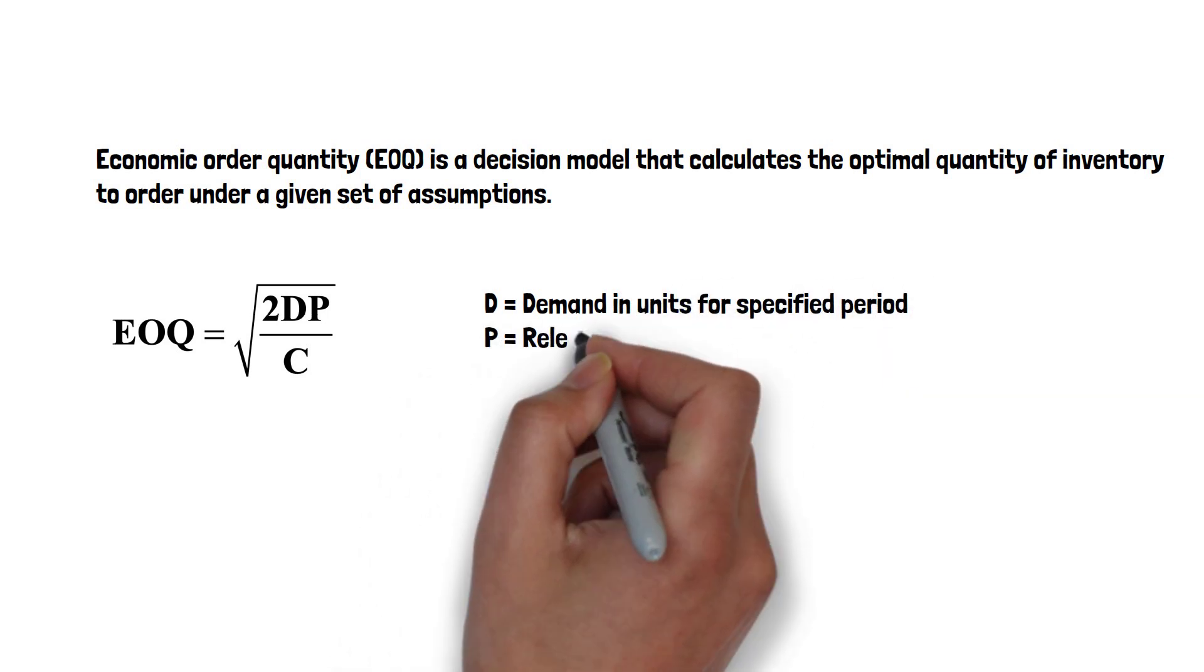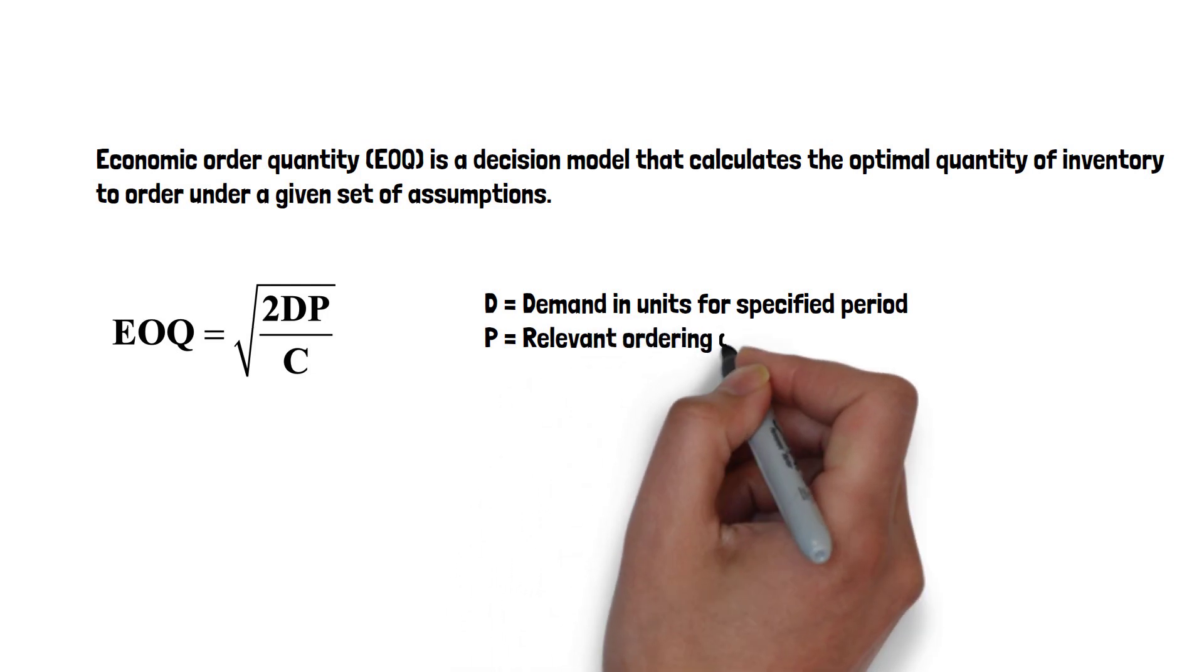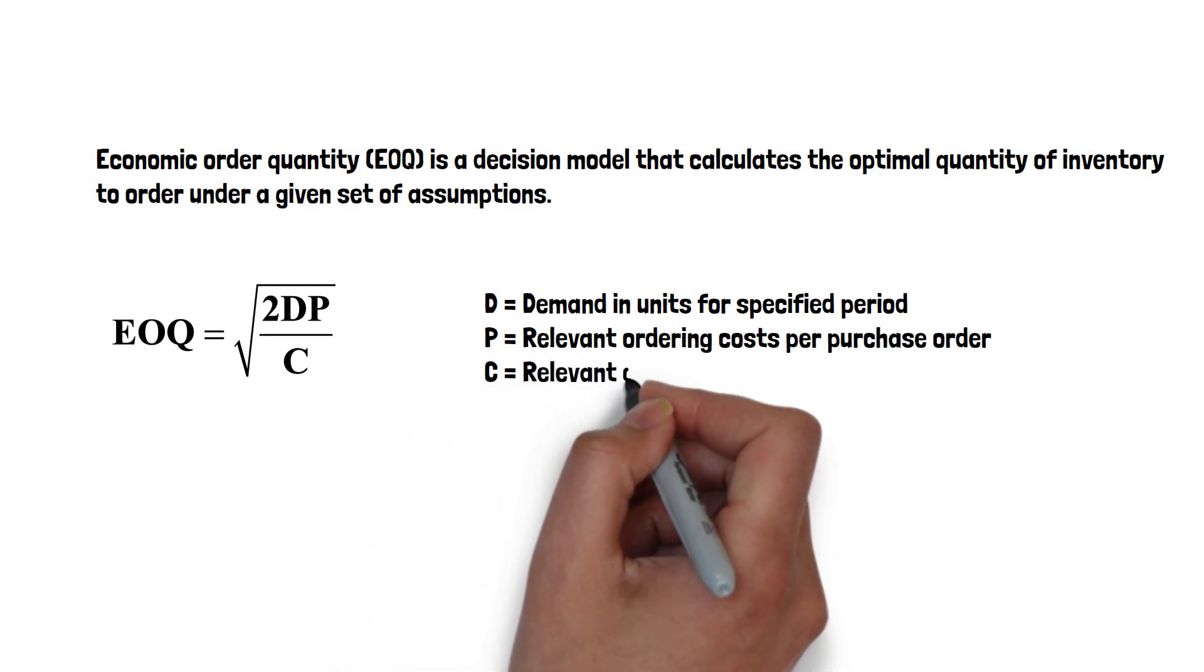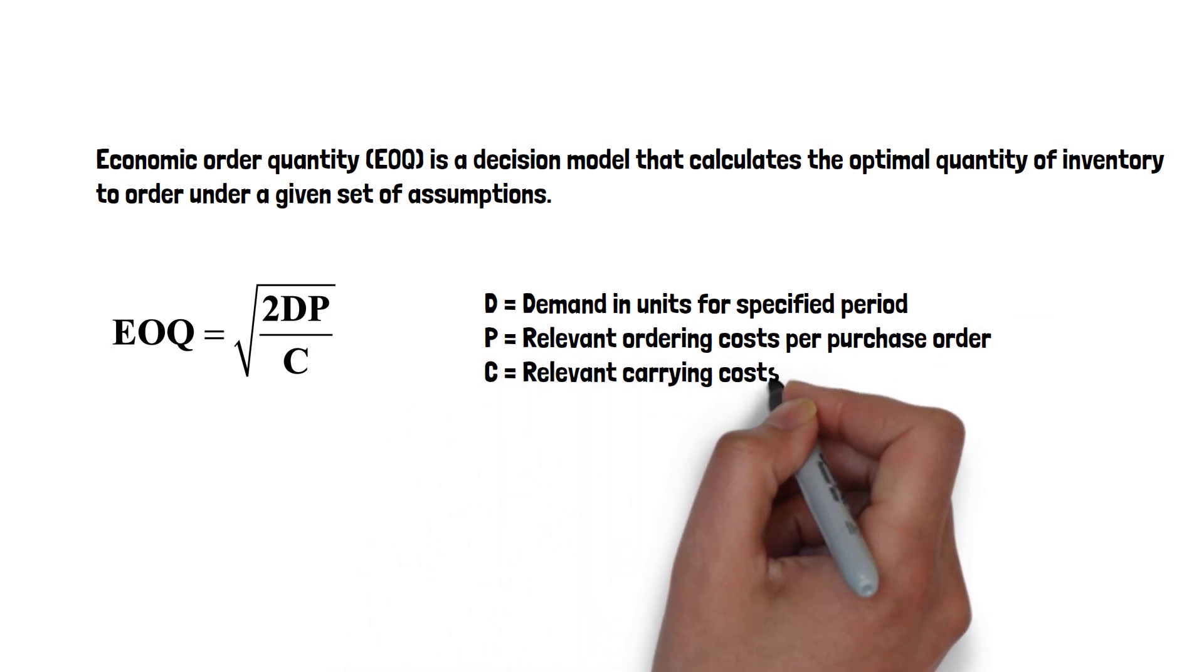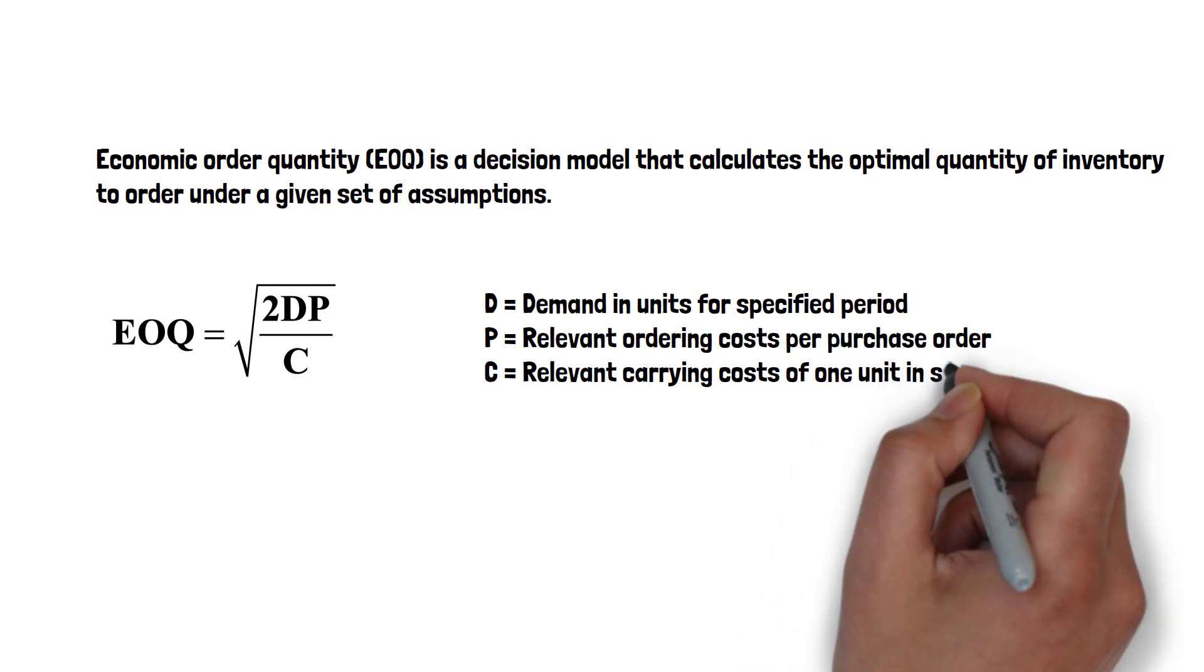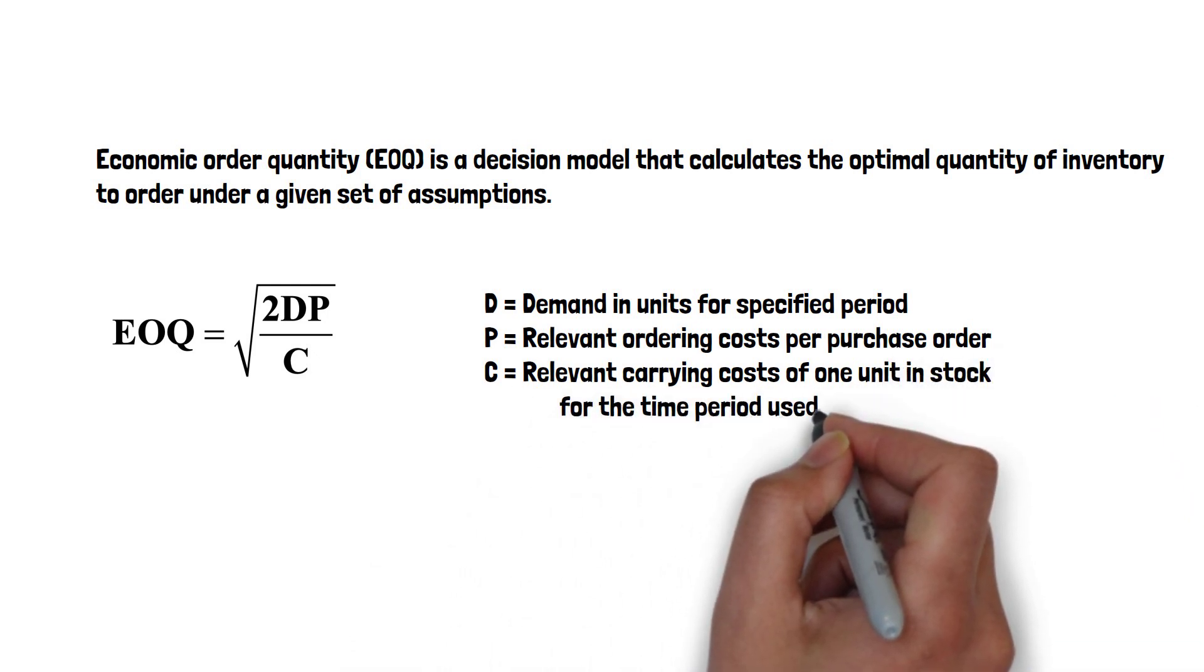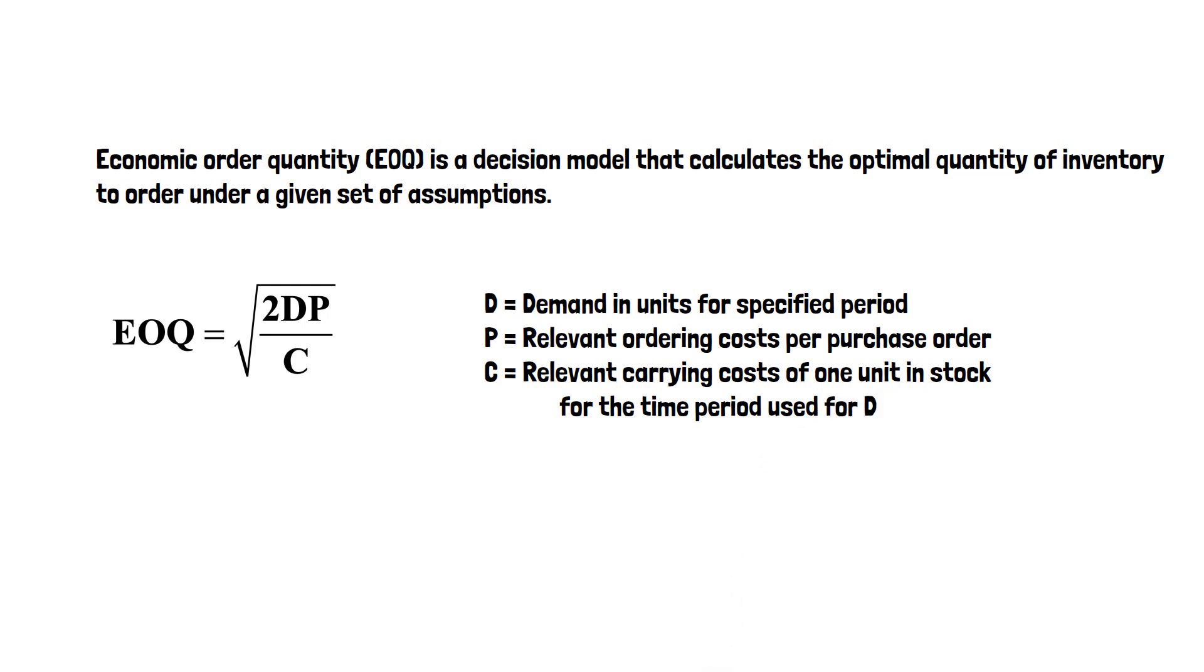D is the demand in units for a specified period, P is the relevant ordering cost per purchase order, and C is the relevant carrying cost of one unit in stock for the time period used for D.